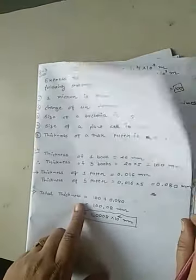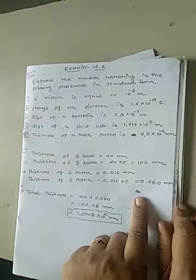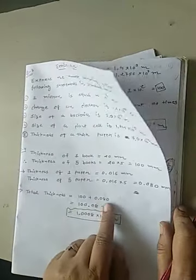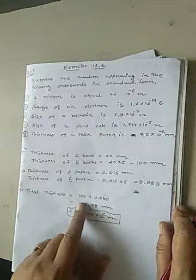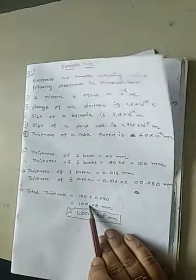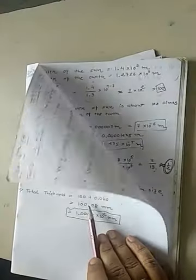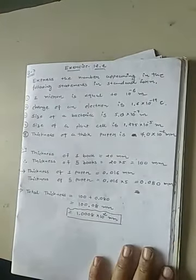Now, what we want? Total thickness of this stack. So, add these 2 to get the total thickness. 100 plus 0.080. Thus, this addition will be 100.08 mm. And if you write the answer in standard form, point will shift to the left. Listen, what happens in the standard form before the point? There should be only one digit.